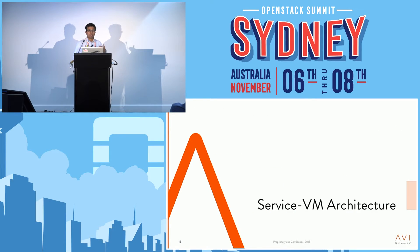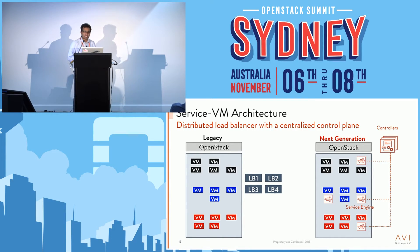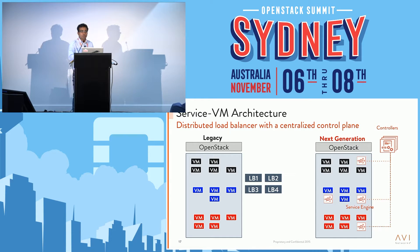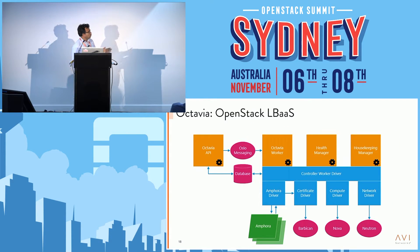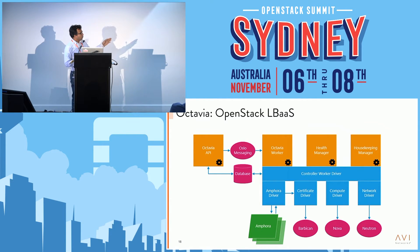In contrast, the best architecture is the service VM architecture. Instead of load balancers outside like in the legacy approach, the next-generation service VM-based architecture uses a controller that creates data plane engines called service engines within OpenStack to do the load balancing — a software-based solution that scales well. The OpenStack project Octavia implements this service VM architecture and is still a work in progress with many features being added.